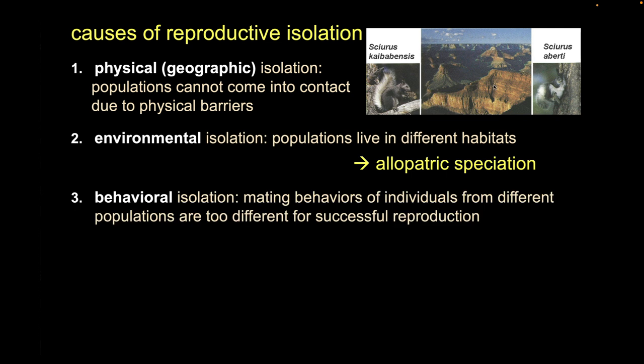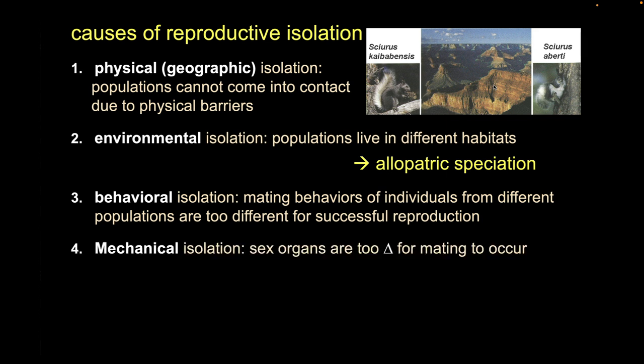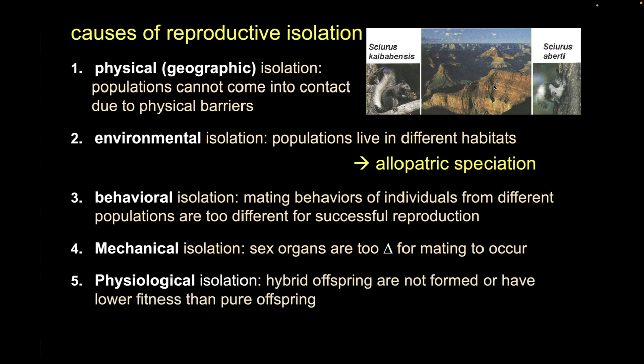We can also have other types of isolation to generate diversity. Behavioral isolation: maybe one group develops a special smell preference and avoids individuals that smell different. Mechanical isolation: reproductive structures that physically can't interact. Physiological isolation: hybrids are produced but aren't as fit as the parents. Those last three are examples of speciation in the same place — sympatric speciation. So we have broadly allopatric speciation and sympatric speciation.